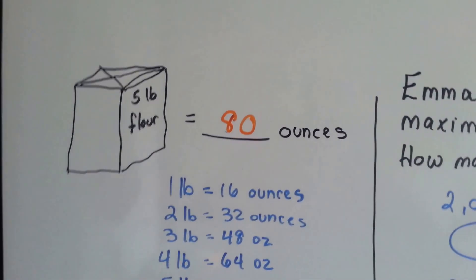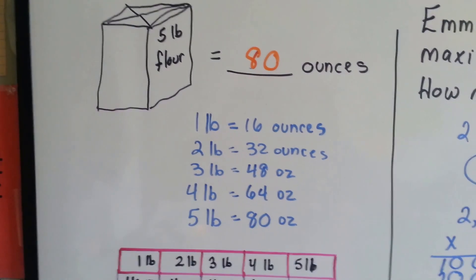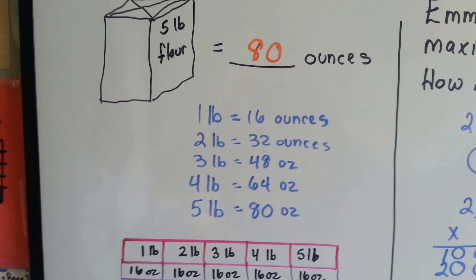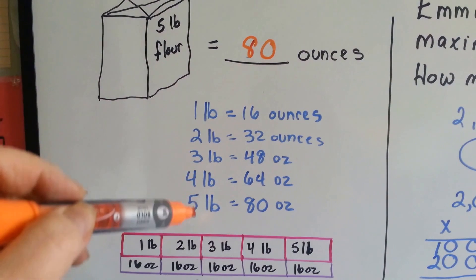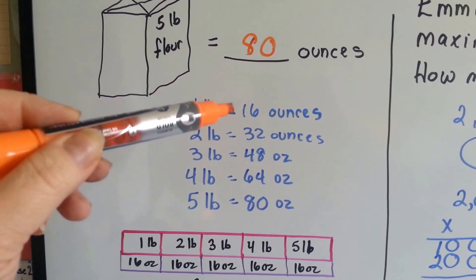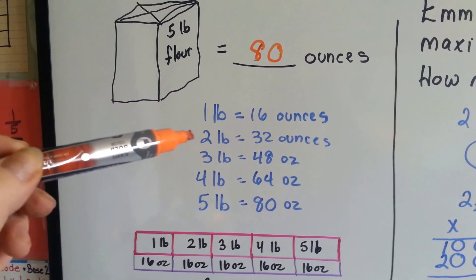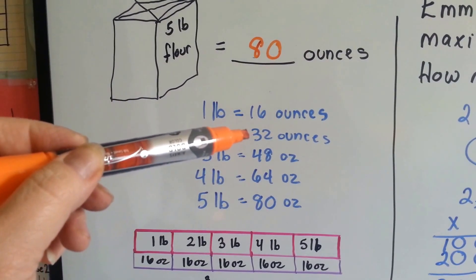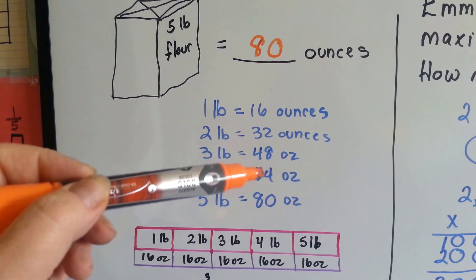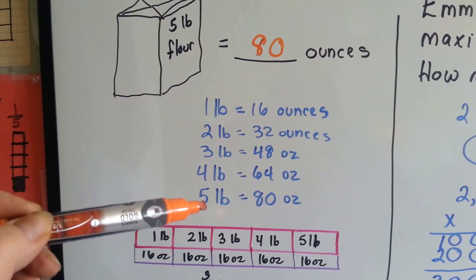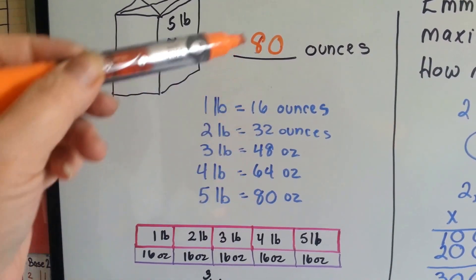If we had 5 pounds of flour and needed to figure out how many ounces it was, we could build a table because 1 pound equals 16 ounces. We could make a table showing that 2 pounds is 32 ounces and increase it by 16 each time. Then we'd see 5 pounds is equal to 80 ounces.